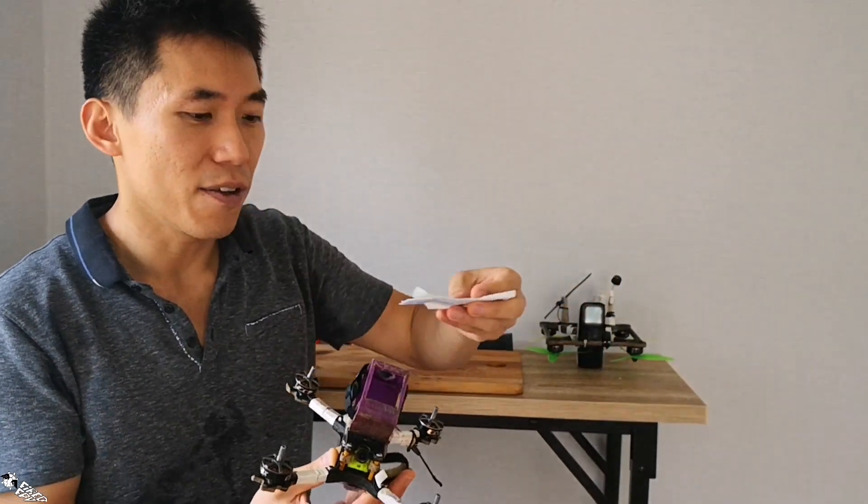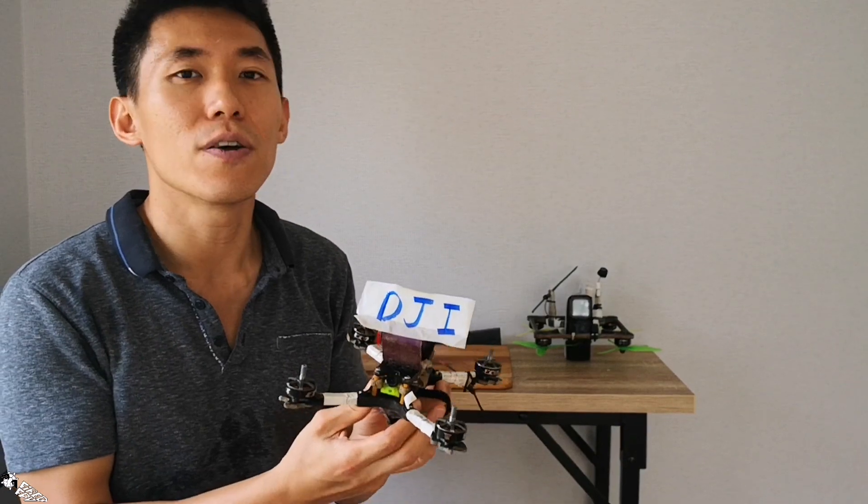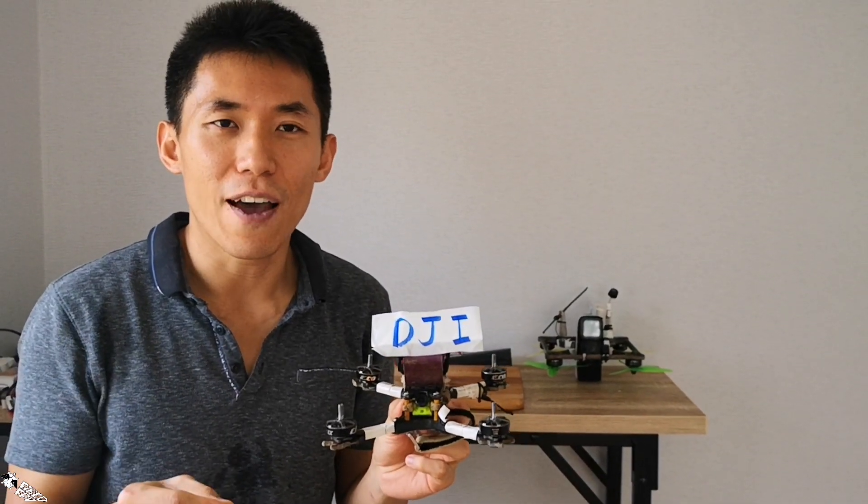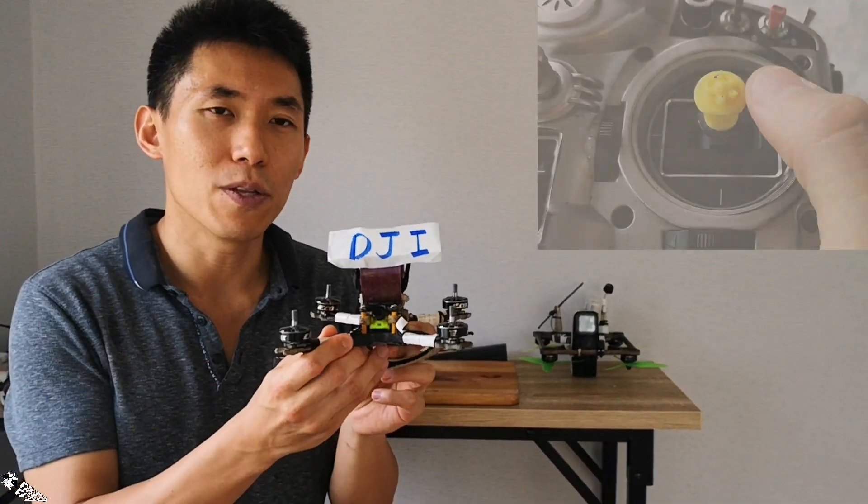Well, there are two major differences between Acro Mode and the other two modes. The first is that if you're flying a DJI drone or Angle Mode controlled drone, if you roll your control stick to the left as far as possible and hold it there, what happens to the drone is